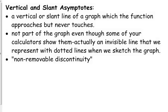The third thing we're going to talk about are another type of asymptote. We've got vertical asymptotes and we have slant asymptotes, and that means you have a vertical or a slant line of the graph which the function approaches but never touches. Horizontal asymptotes, technically you can cross them.